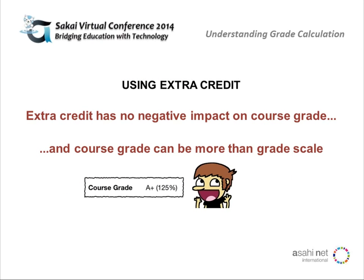Let's talk about extra credit. You can already kind of do extra credit in the gradebook because you can add more points beyond the maximum — say an item worth 50 points and you add 60 or 70. But in that case, you're still tied to the idea of the sum of earned points divided by the sum of possible points. The new extra credit in Sakai 10 works differently than that. The total possible points for the extra credit is just the total number of points that you can add.